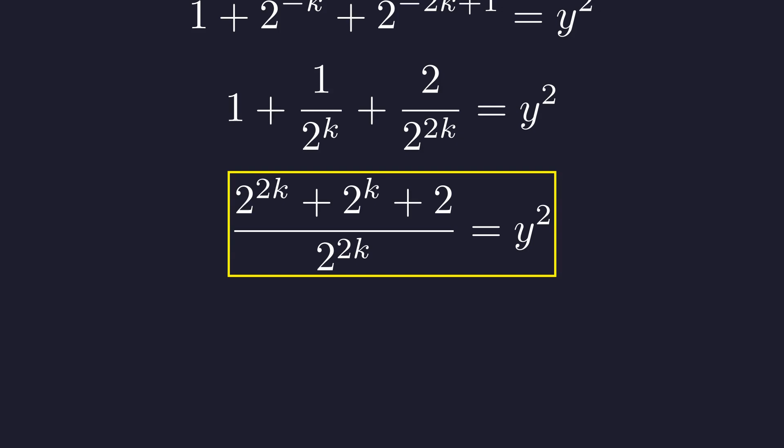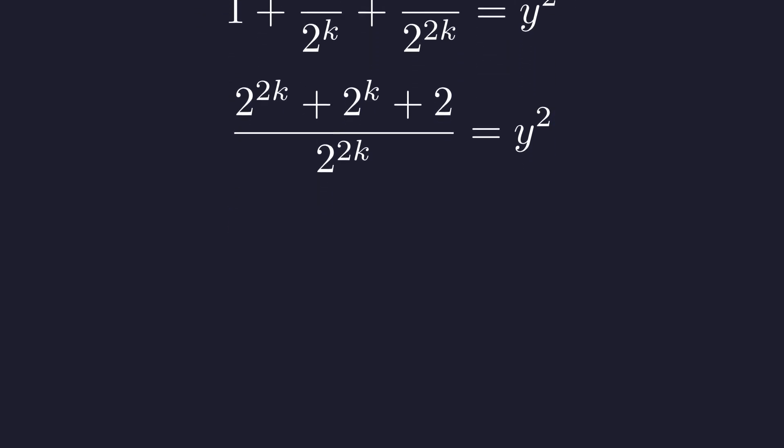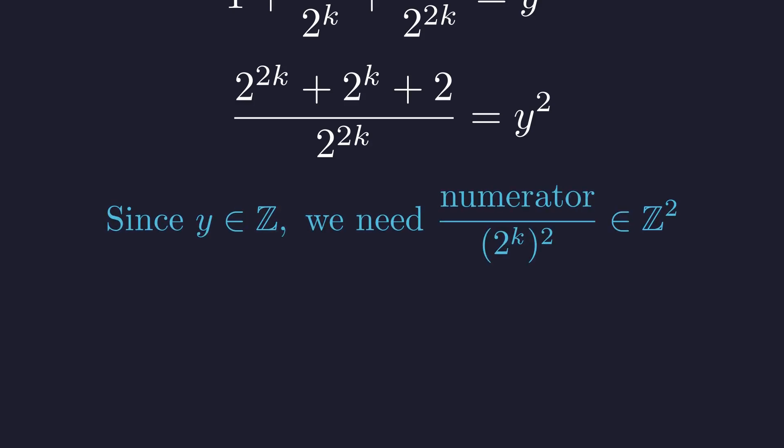Since y must be an integer, this fraction must equal an integer squared. This means the numerator must also be a perfect square. More precisely, since the denominator is a perfect square and the result must be an integer squared, the numerator itself must be a perfect square.